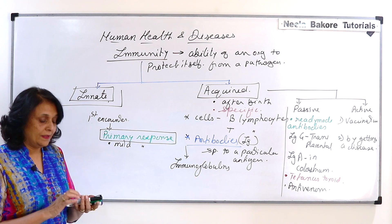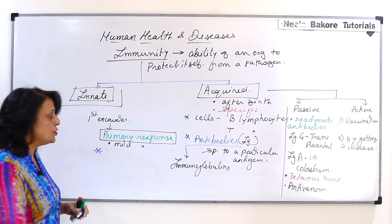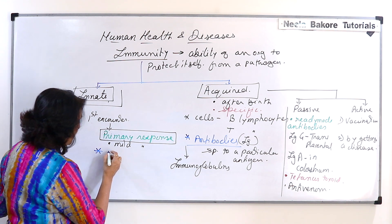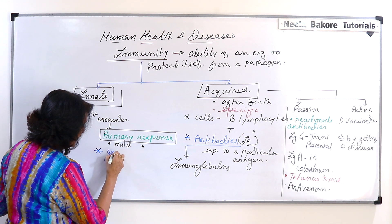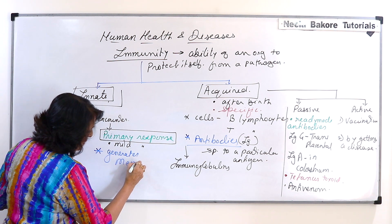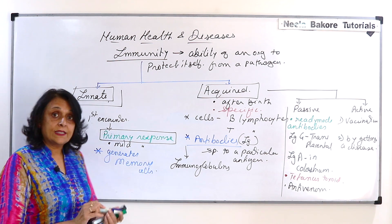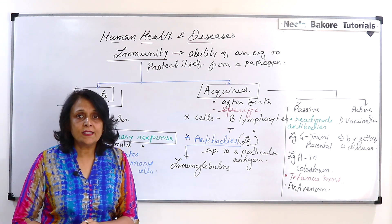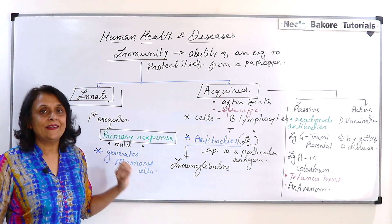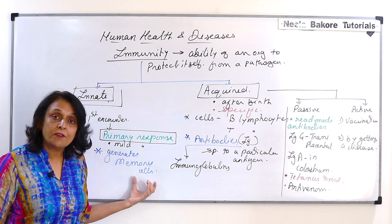Whenever this primary response happens, it also results in the generation of memory in our body. The primary response generates memory cells. These memory cells have been stimulated by that pathogen once, so we have this recognition ready in our body.